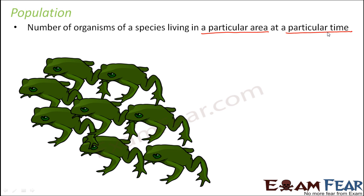Otherwise you will not be able to define population. It is always about number of organisms in a particular area at a particular time. With time, the number of organisms would change. It might increase, it might decrease. So a population is always defined for a particular area at a particular time.